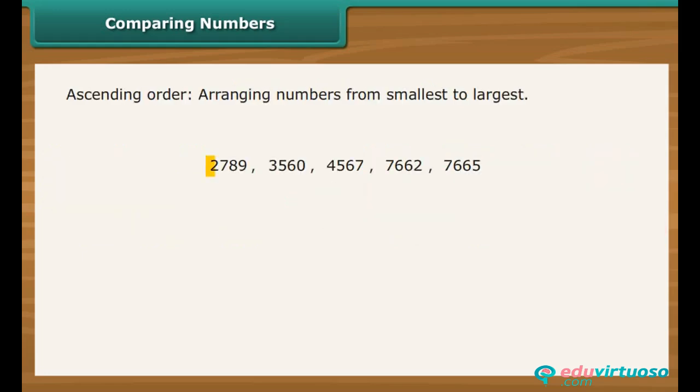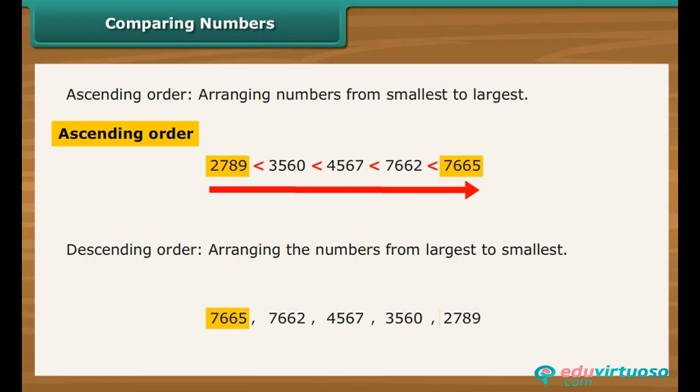The arrangement of numbers from the smallest to the largest is called ascending order. The arrangement of numbers from the largest to the smallest is called descending order.